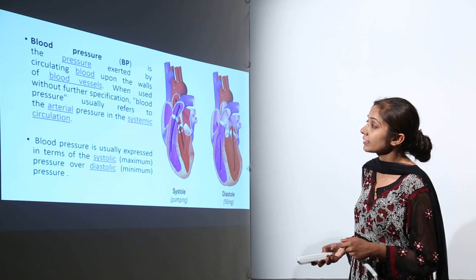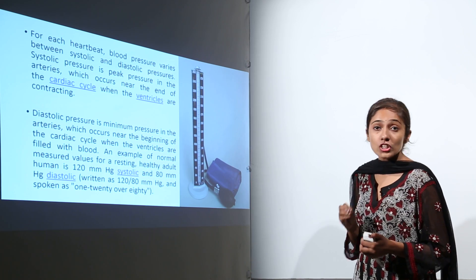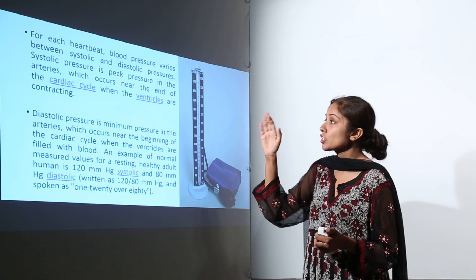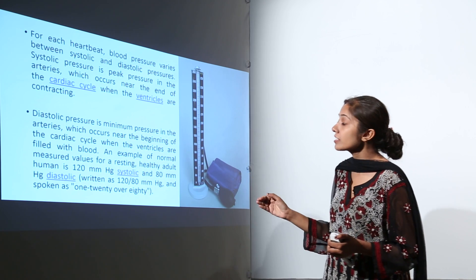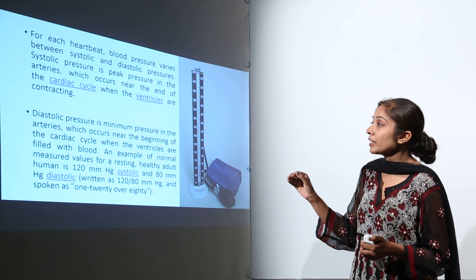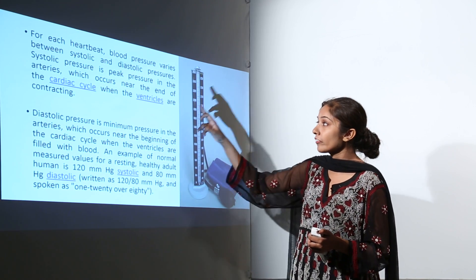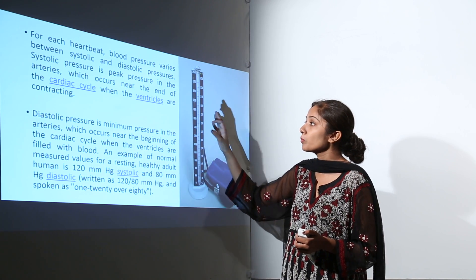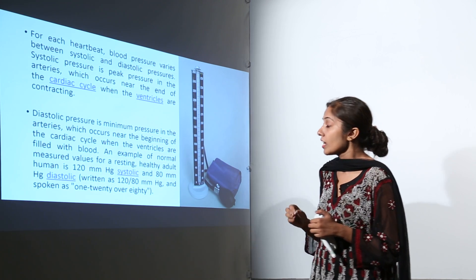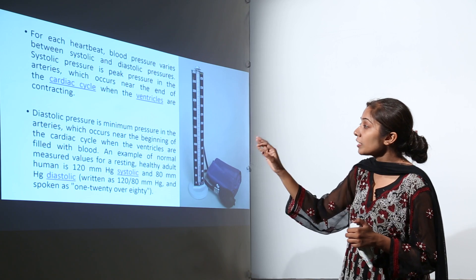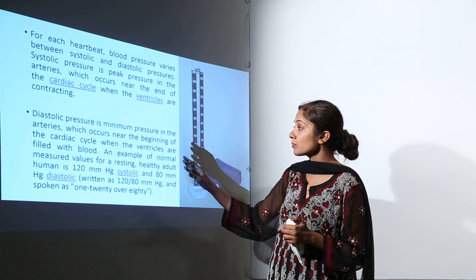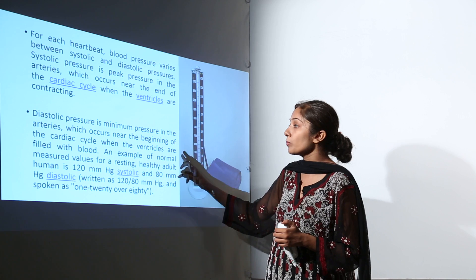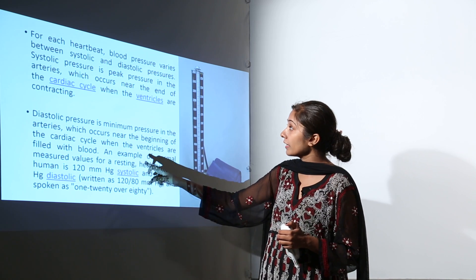For each heartbeat, blood pressure varies between systolic and diastolic pressures. Systolic pressure is peak pressure in the arteries, which occurs near the end of the cardiac cycle when the ventricles are contracting. Diastolic pressure is minimum pressure in the arteries, which occurs near the beginning of the cardiac cycle when the ventricles are filled with blood.